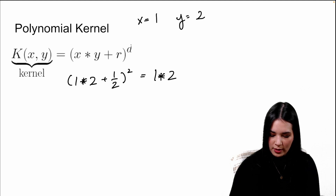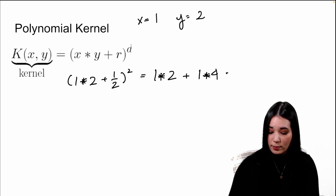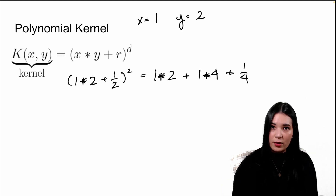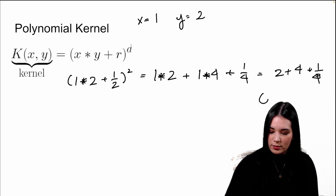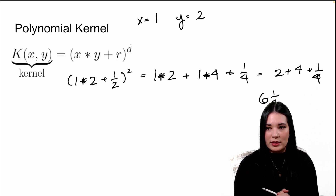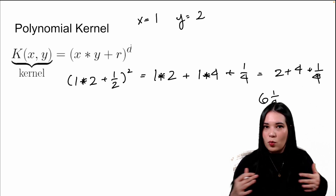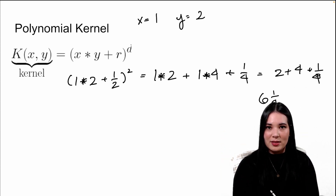Expanding that out, we get 1 times 2 plus 1 squared, which is 1 times 2 squared, which is 4, plus one quarter. In other words, the relationship between these two points is 2 plus 4 plus one fourth, or 6 and one fourth. Now notice, when I did that math to calculate the relationship between these points, never once did I take my data and project it to our two-dimensional space. I just plugged it into our kernel.